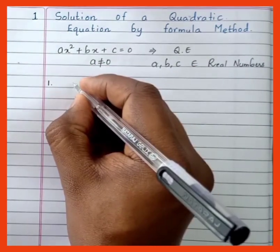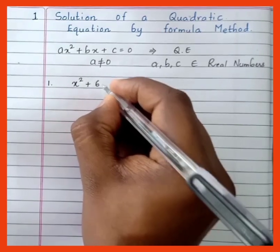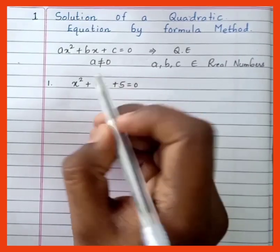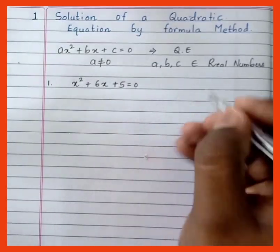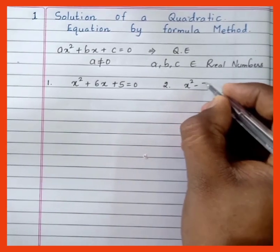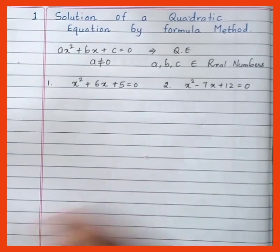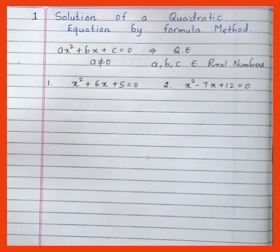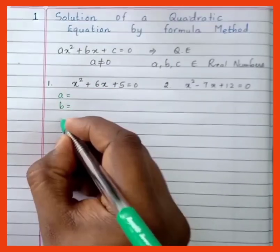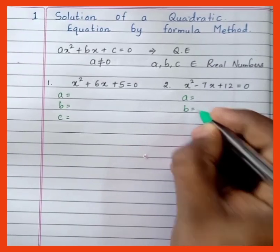Now we'll see a few examples of quadratic equations. The first example is x² + 6x + 5 = 0, which is a quadratic equation because it is of the form ax² + bx + c = 0. The second example is x² - 7x + 12 = 0.